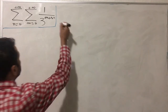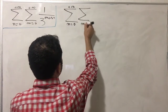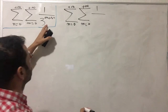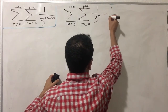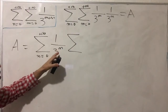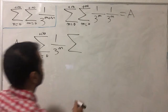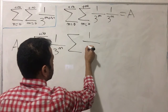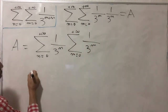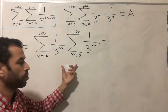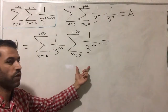Let's get started with the first sum. As you can see, this is a clear sum: as m goes from zero to plus infinity and n goes from zero to plus infinity, we have 1 over 3 to the m plus n. I can write this term as 1 over 3 to the m multiplied by 1 over 3 to the n, since both sums are independent.